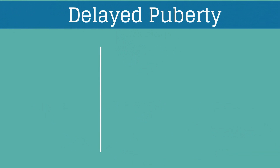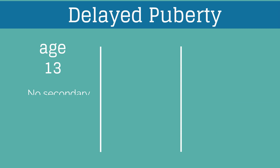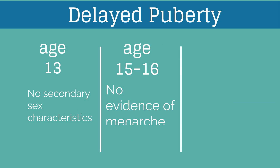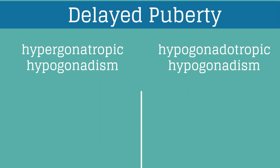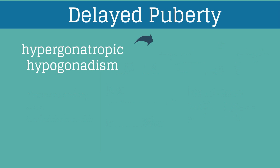Let's now discuss delayed puberty, which is defined as no secondary sex characteristic development by age 13, no evidence of menarche by age 15 to 16, or if menses have not occurred within five years of thelarche. There are hypergonadotropic and hypogonadotropic etiologies for the hypogonadism associated with delayed puberty.